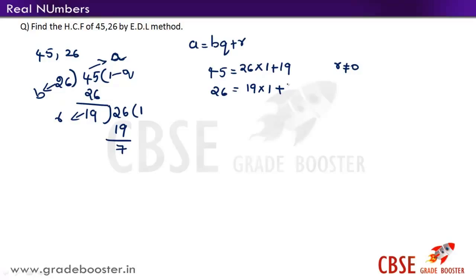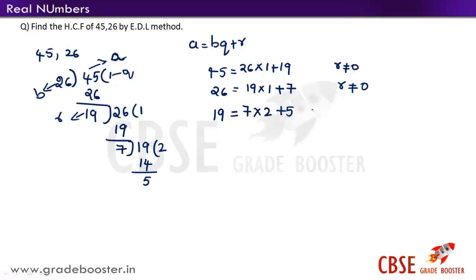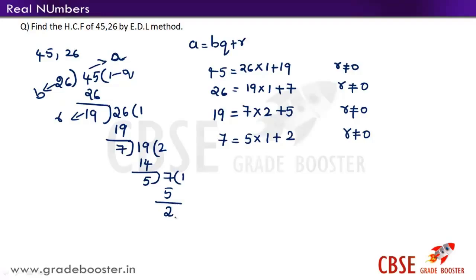The remainder is not equal to 0, so continue the process till the remainder equals 0. Divide 19 by 7 — the remainder is 5. Expressed as: 19 = 7 × 2 + 5. The remainder is still not equal to 0, so divide 7 by 5 — we get 2 as remainder. Repeat the process till we get 0. Divide 5 by 2 — we get 1 as remainder.